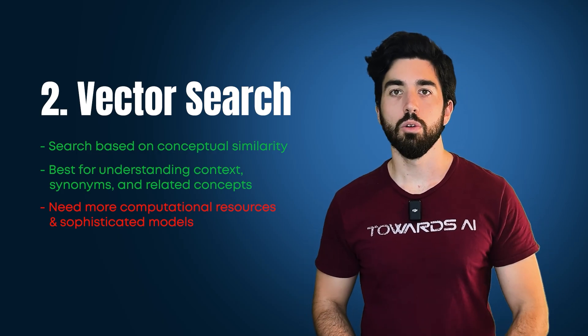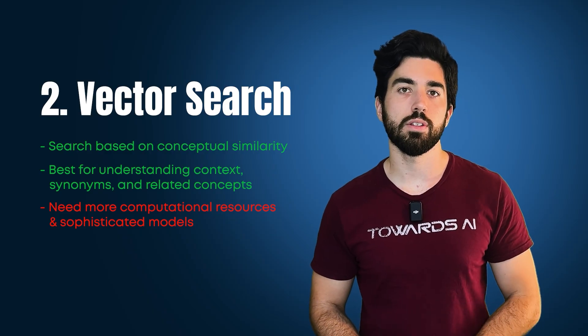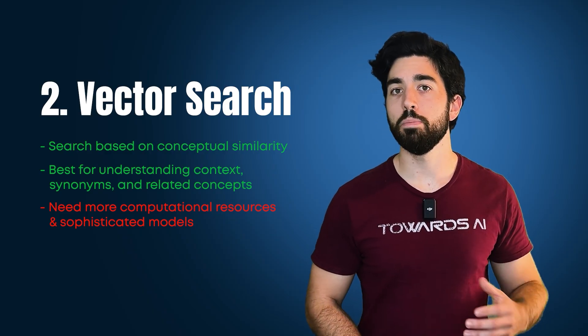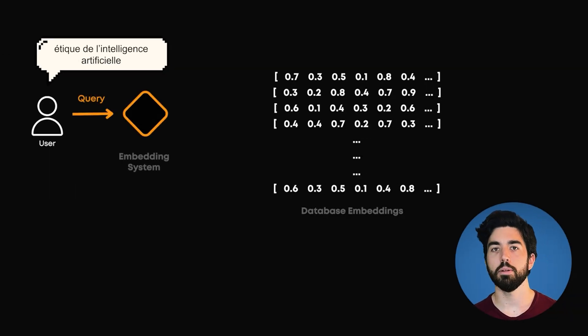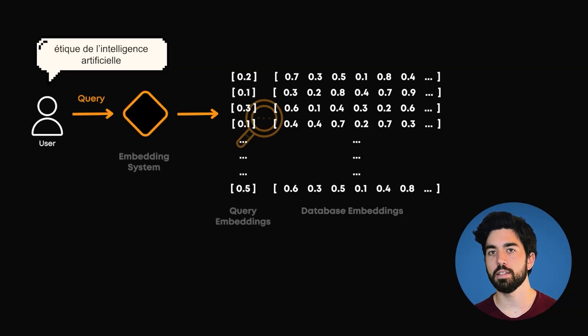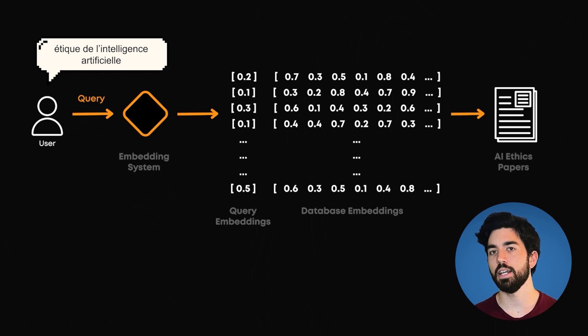We use embedding search when we need to find similar ideas, even if they use different words. It's great for research tools when people might describe the same thing in different ways. For example, it could help find papers about AI ethics, even if a user says Éthique de l'intelligence artificielle in French, because it understands that both mean somewhat the same thing, even if it's not the same words or even the same language.